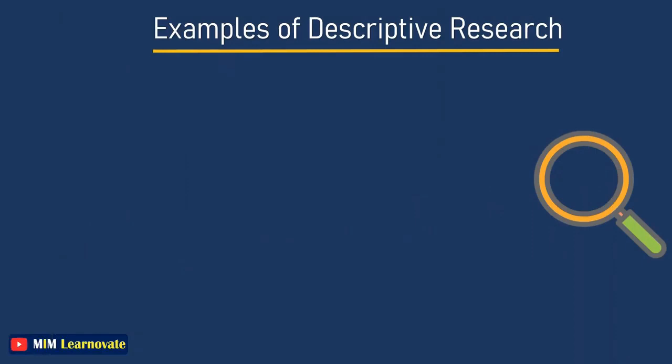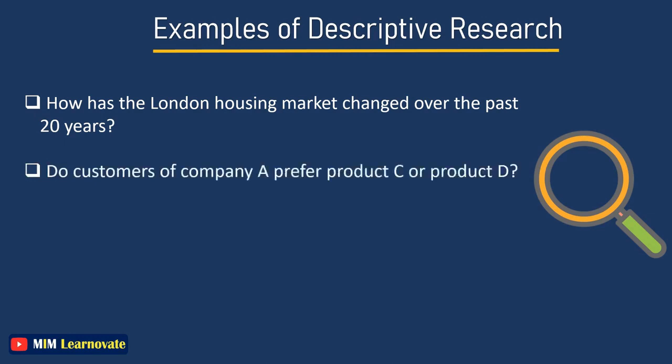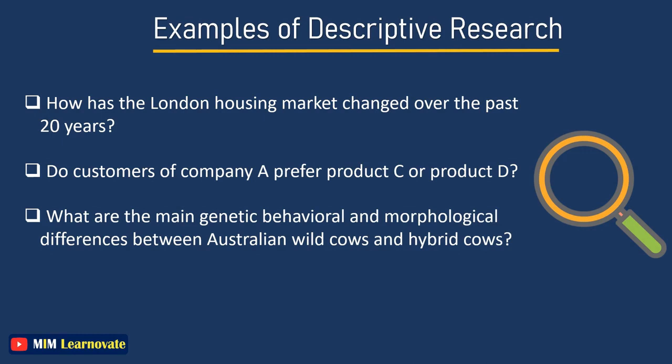Examples of descriptive research questions include: How has the London housing market changed over the past 20 years? Do customers of company A prefer product C or product D? What are the main genetic, behavioral, and morphological differences between Indian wild cows and hybrid cows? How prevalent is disease 1 in population Z?